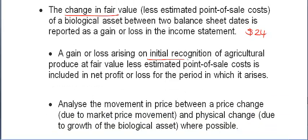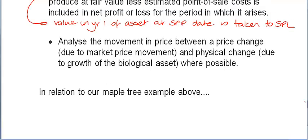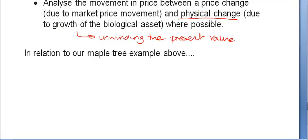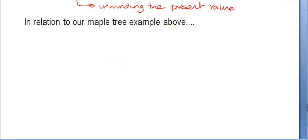In terms of initial recognition, the value in year one of the asset at the SFP date is taken to the statement of profit and loss. Ideally, we should analyze the movement in price between the price change due to market movement and the physical change due to the growth of the biological asset — essentially unwinding the present value. Let's crunch the numbers using our maple tree example and break it down into components.